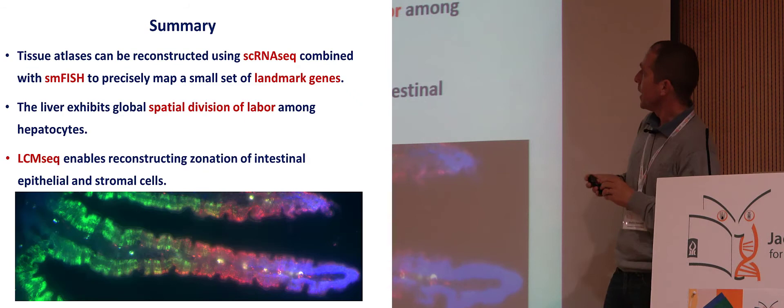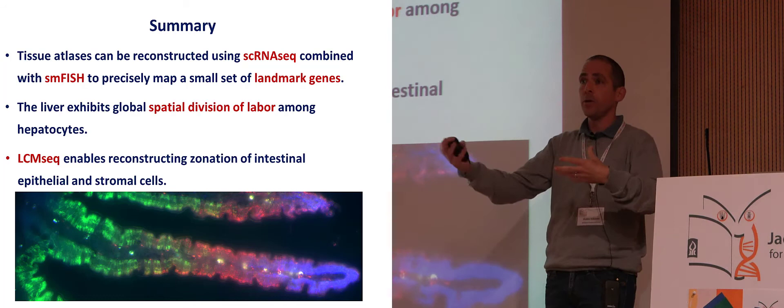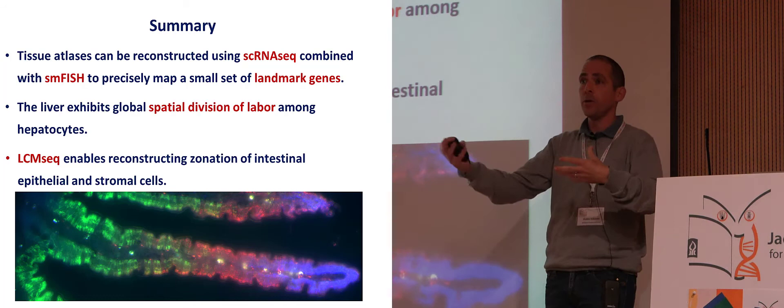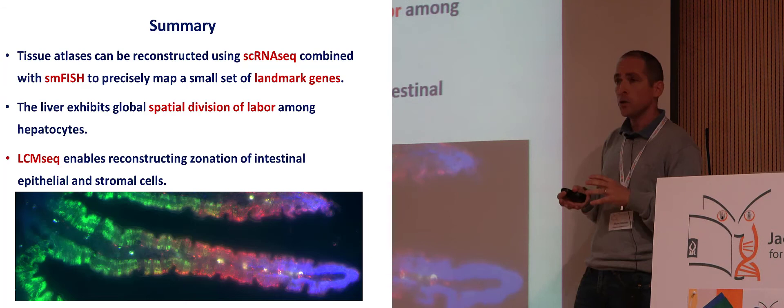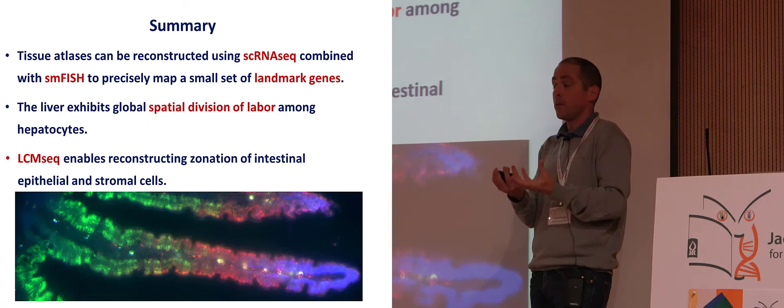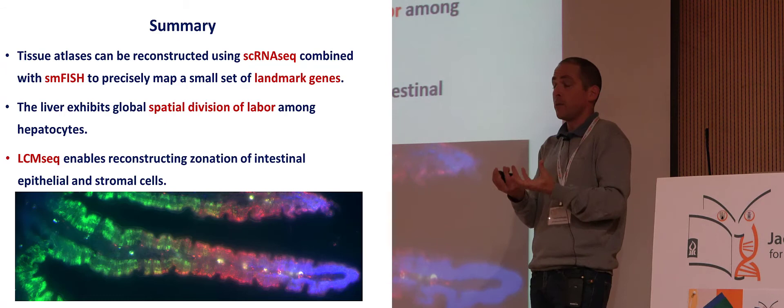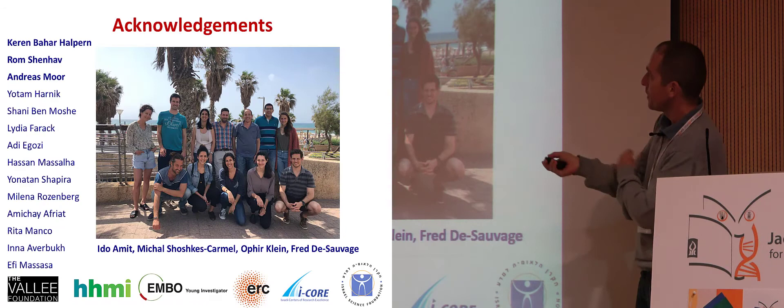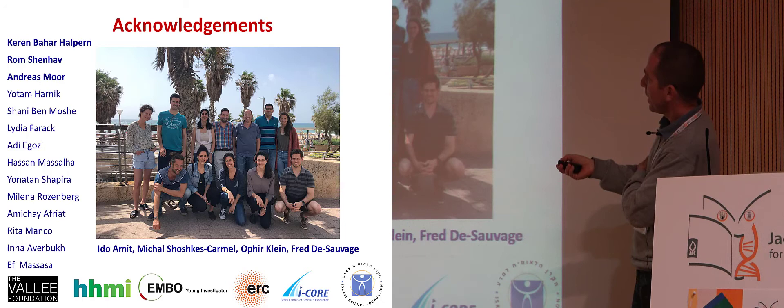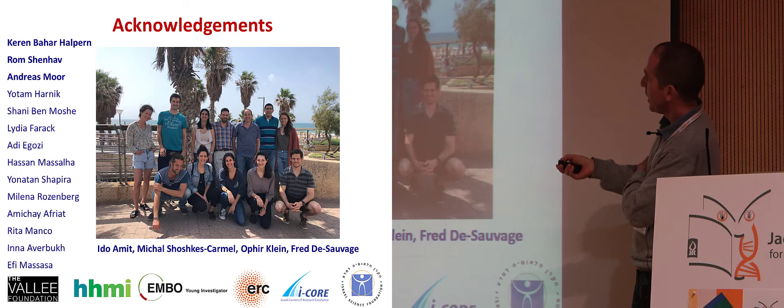I told you about tissue atlases that can be reconstructed from single cell RNA sequencing combined with landmark genes obtained from microscopy. I've shown you that the liver exhibits global spatial division of labor that may be optimal for liver function. I've shown how laser capture microdissection provides a crude transcriptomic map, supplying a large group of landmark genes that allows us to reconstruct atlases of other tissues like the intestinal epithelium and stroma. I want to thank my lab — Karen Bahar Halperin, Rom Shenhav, Andreas, and all of the other amazing students. We collaborate closely with Ido Amit, Michal Shoshis-Karmel, Ophir Klein, and Fred Sauvage. Thanks for listening.